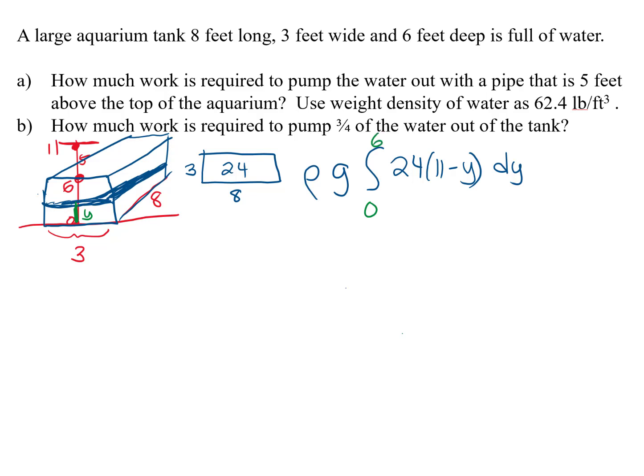So there's our integral. Now we can move the 24 out in front, and then we've got ρ and g, which is our weight density of water, so that's 62.4. Then we can integrate this 11 minus y and get 11y minus one-half y squared, and that's evaluated from zero to six.